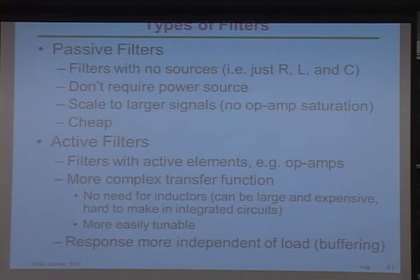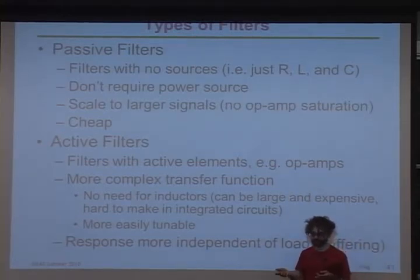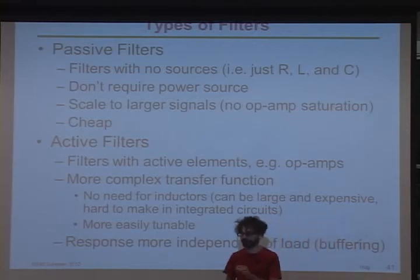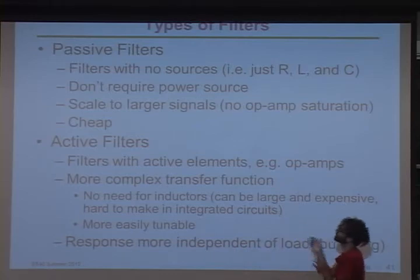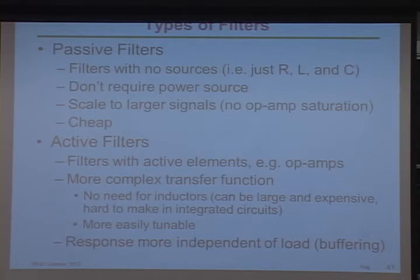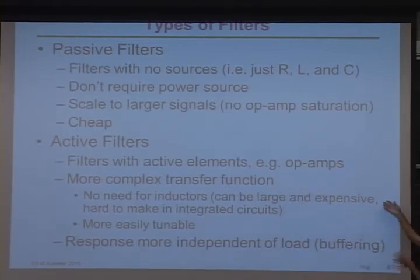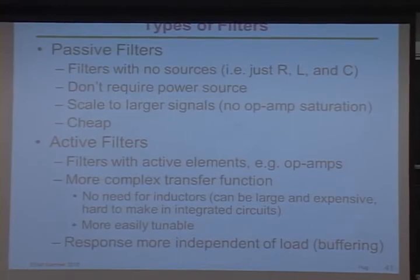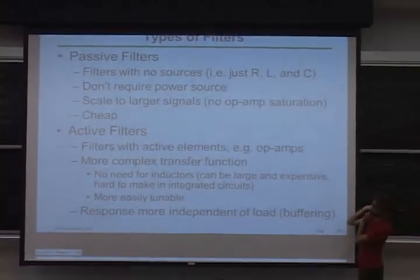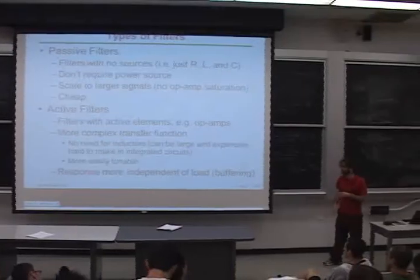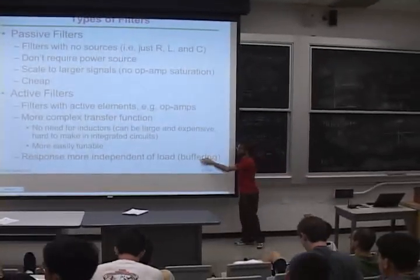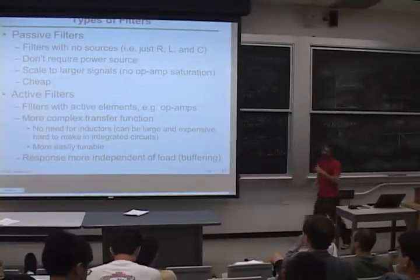I'll just mention for Wednesday — to draw the distinction — there are passive filters, the kind we did in class with the resistor. The ones we've been talking about so far are just resistors, capacitors, and inductors, so they're passive. They don't have any sources. They're nice because they don't need any power, they can handle big voltages because there's nothing to worry about saturating, and they're cheap. The other kind of filter, which you'll build on Wednesday, is an active filter — basically the same thing but with an op-amp. You'll have plenty of those in your homework, and the thing about active filters is that you can get more complex answers, but they're really nice. The other nice thing about them is they give you independence of load.